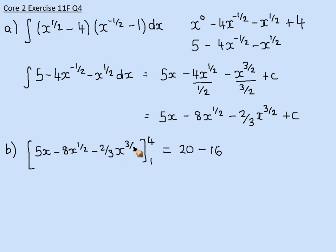And then 4 to the power of 3 over 2 is going to be the square root of 4, which is 2 to the power of 3, which is 8. So, then 8 times 2 over 3 is going to be 16 over 3. And I've got to subtract what I get when I substitute 1 in. So, it's going to be 5 minus 8 minus 2 over 3.